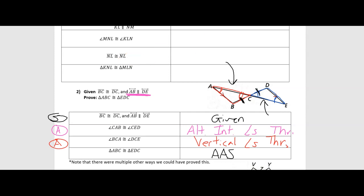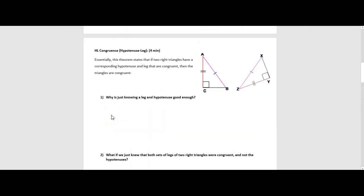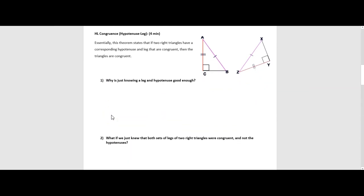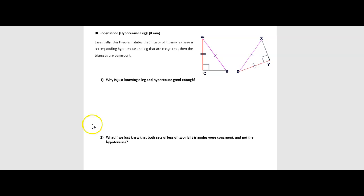Let's go back and look at our third and final shortcut for the day: HL congruence. HL stands for Hypotenuse-Leg congruence. This theorem states that if two right triangles have a corresponding hypotenuse and leg that are congruent, then the triangles are congruent. We have to have right triangles — that's key — and we need a set of congruent hypotenuses and a set of congruent legs.